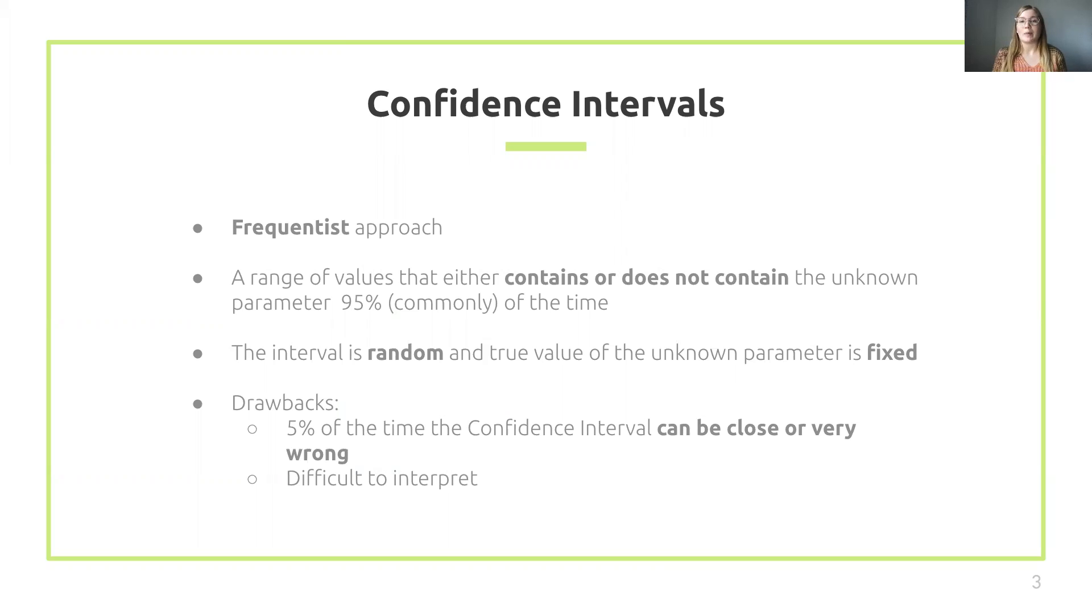Some drawbacks of this approach are that 5% or the opposite of 95% or 90% of the time, the confidence interval can be slightly wrong or completely wrong. There is nothing governing how close or far away from the true parameter the bounds of the confidence interval are when the confidence interval is incorrect. Interpretation can also be difficult to understand and is often done incorrectly because of the way the confidence interval is constructed.